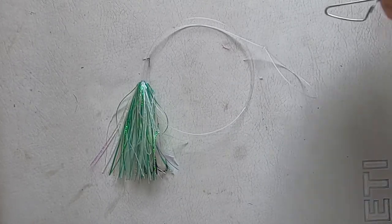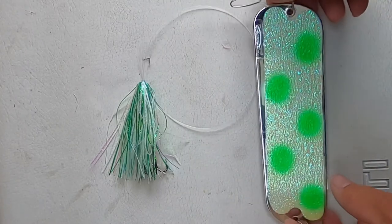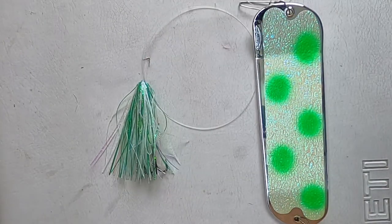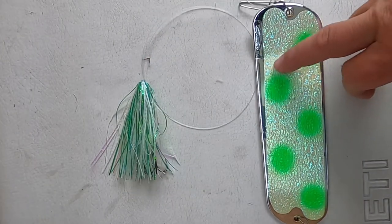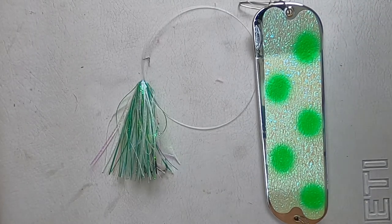Now that we have our loop tied, we're going to add our flasher. We're going to run that K41 fly behind a stinger Captain Volume, and this rig is going to help us put some kings in the boat this year.